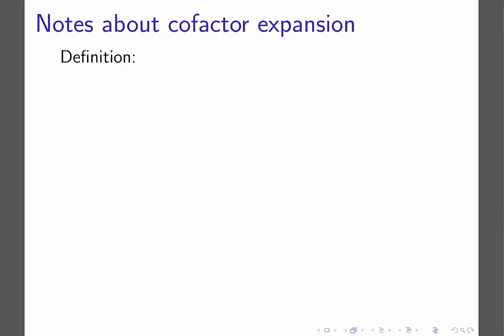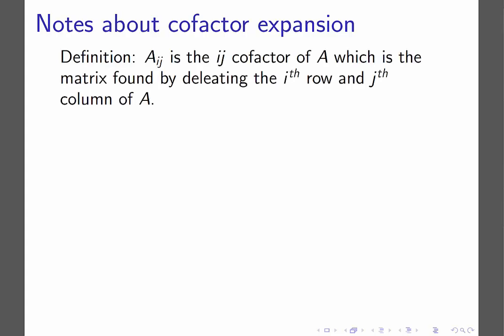So we begin with a couple of preliminary notes that we will need. I'm calling this Notes About Cofactor Expansion. We're going to define A sub IJ — that's a capital A with subscript IJ — as the IJ cofactor of A, which is the matrix found by deleting the Ith row and Jth column of A.